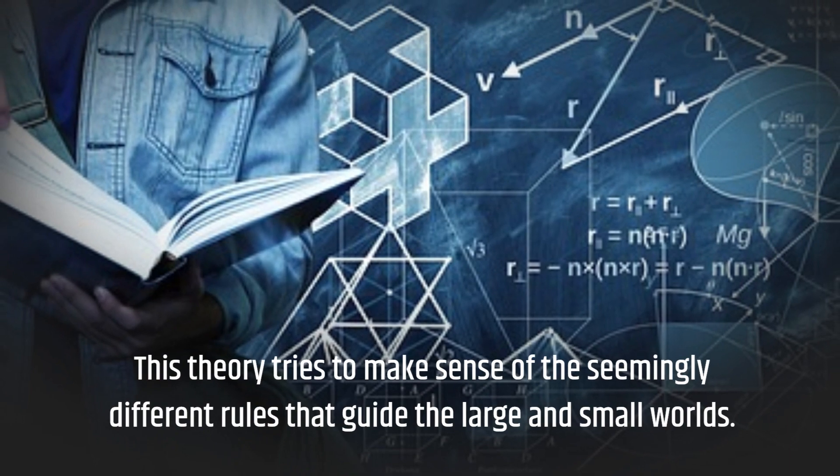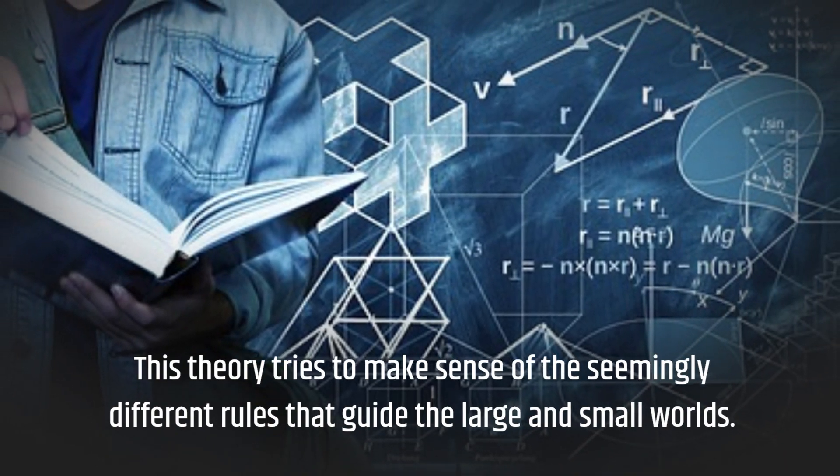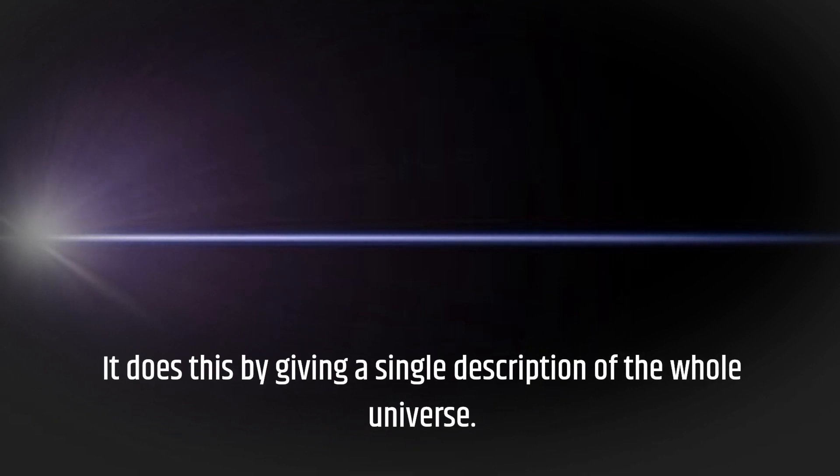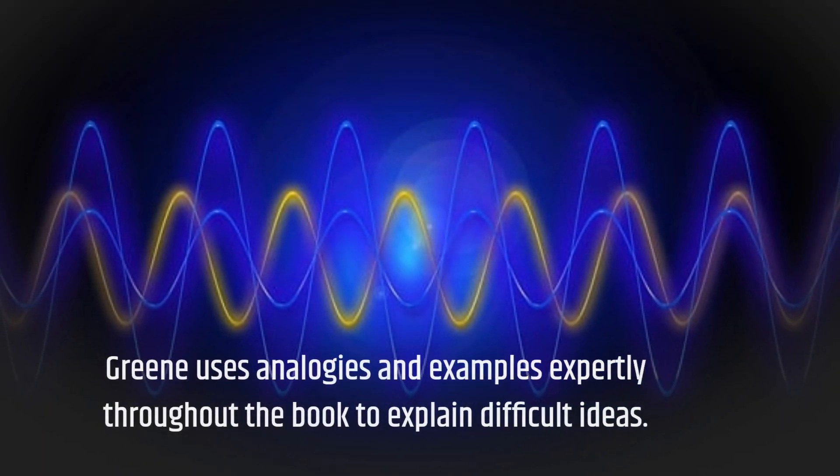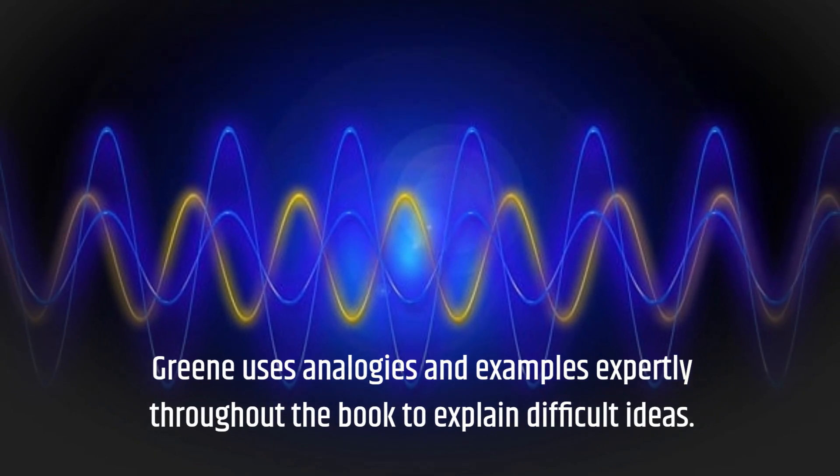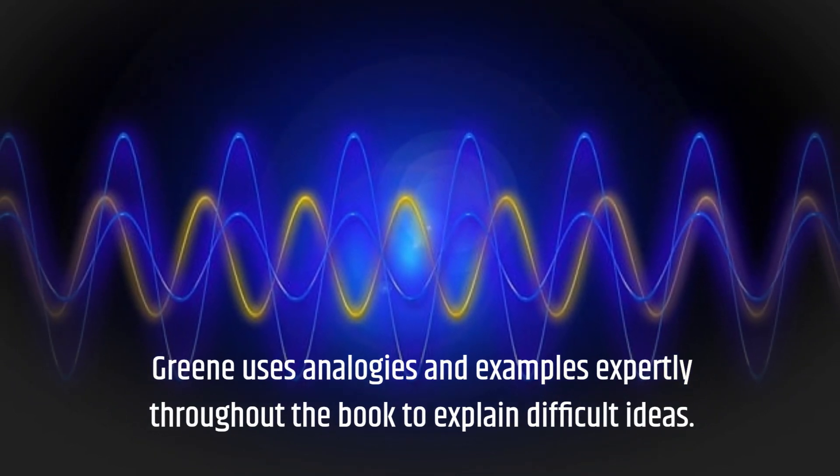This theory tries to make sense of the seemingly different rules that guide the large and small worlds. It does this by giving a single description of the whole universe. Greene uses analogies and examples expertly throughout the book to explain difficult ideas.